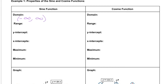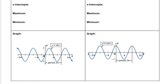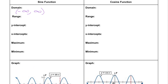Next we're going to take a look at the range. Looking for our possible y values, we can see with our sine graph it's bouncing between negative 1 and positive 1 — not going below it and not going above it. So our range is going to be from negative 1 to positive 1, including both of those numbers, written in brackets.